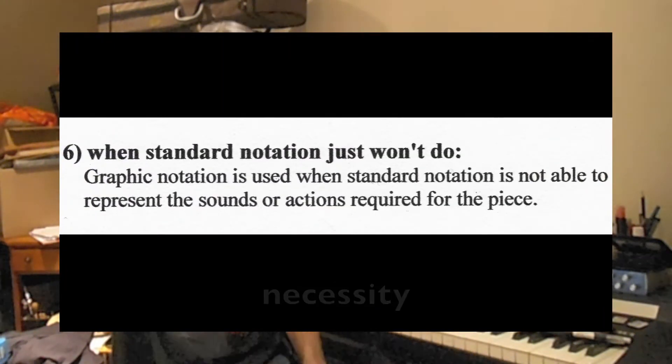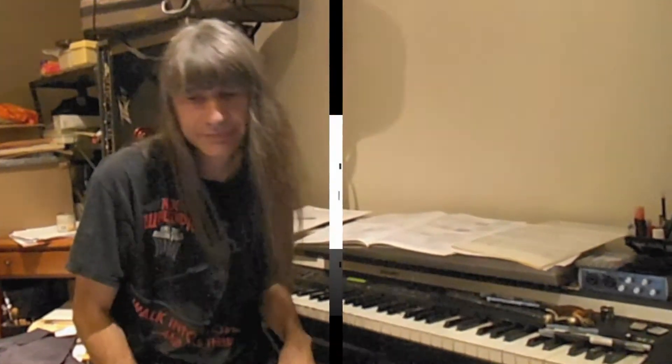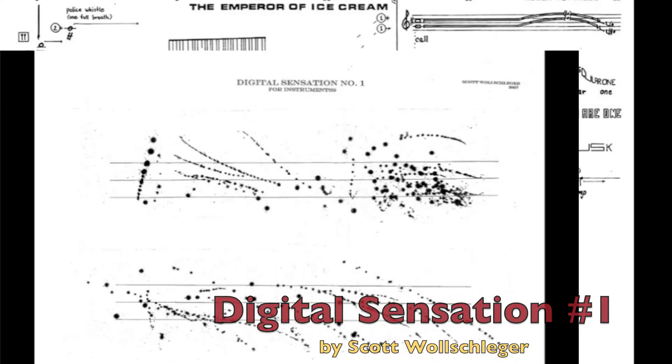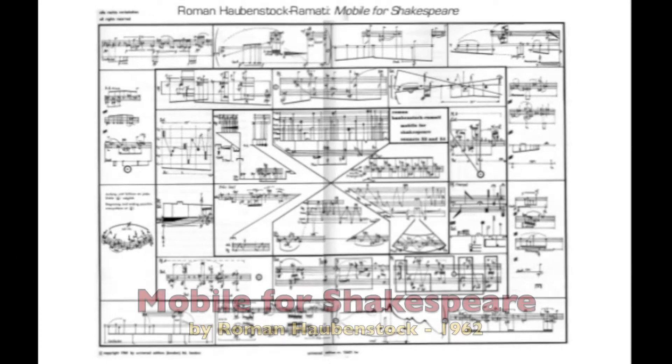A seventh reason, as an extension, would be when music is written to be just a piece of visual art itself. Graphic notation evolved in the 1950s and is sometimes used in conjunction with standard notation. It uses visual symbols to represent musical sounds or actions that are outside the realm of standard notation.